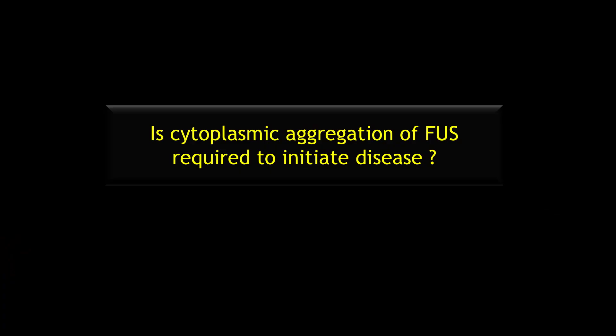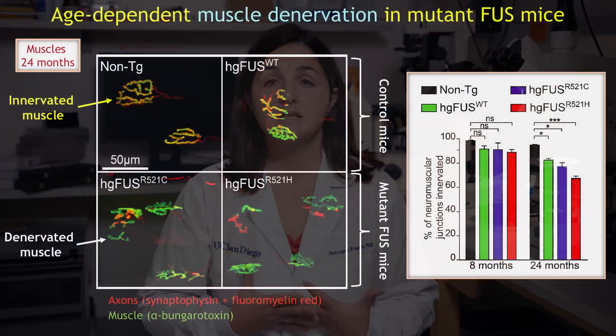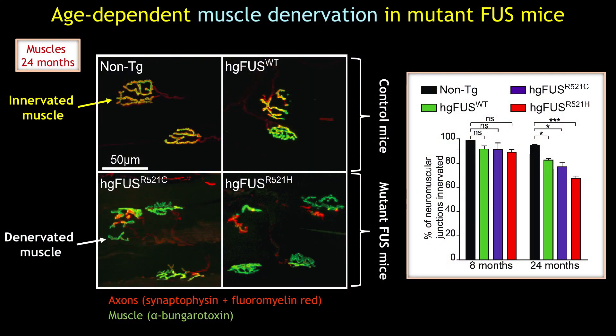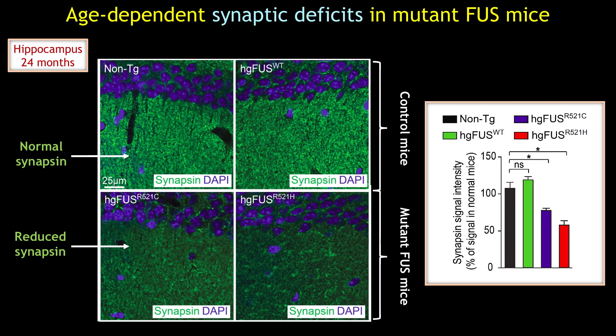A hallmark of ALS patients with FUS mutations is cytoplasmic aggregation of FUS. The humanized FUS mice developed age-dependent motor deficits, including muscle denervation, recapitulating key hallmarks of ALS. These animals also developed features of FTD, a comorbidity commonly found in ALS patients, together with hippocampal synaptic loss.